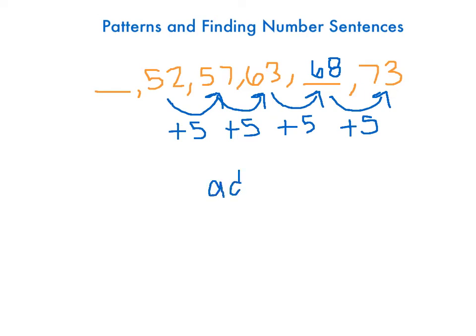So now I have to go back to my starting number. I added 5. Let's check it. So if we have 57 and you add 5 to 57, what would you get? Not 52. I would get 63. So the problem is you're going backwards in your pattern.